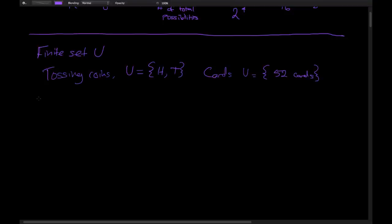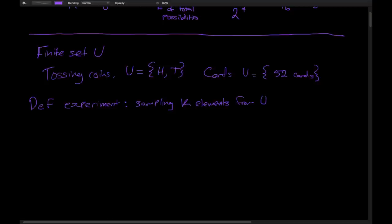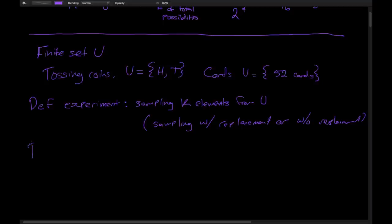So we have this U. Now let's define another thing. We're going to have a lot of definitions for the next little while, but they're needed to give a clear way of solving these problems. Let's define an experiment to be sampling K elements from U. This can be either sampling with replacement or without. Replacement means you put elements back into U after picking one; without replacement means you pull one out and it's no longer in the set of possible outcomes.